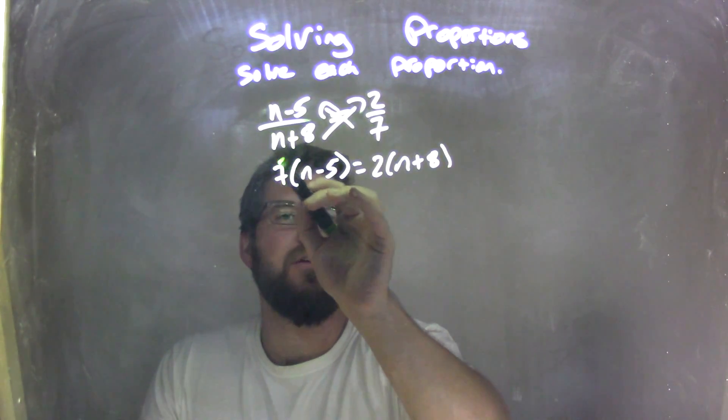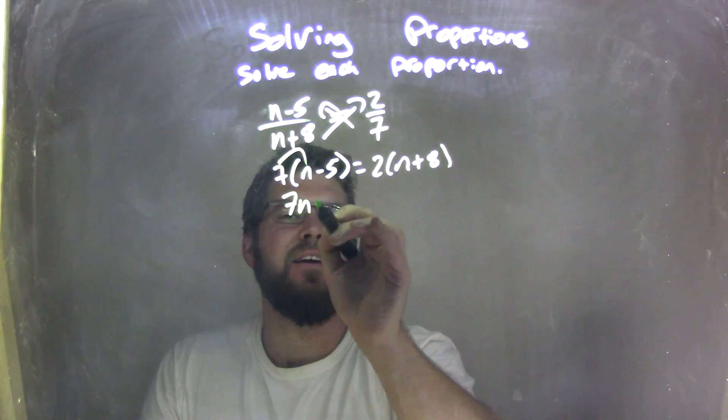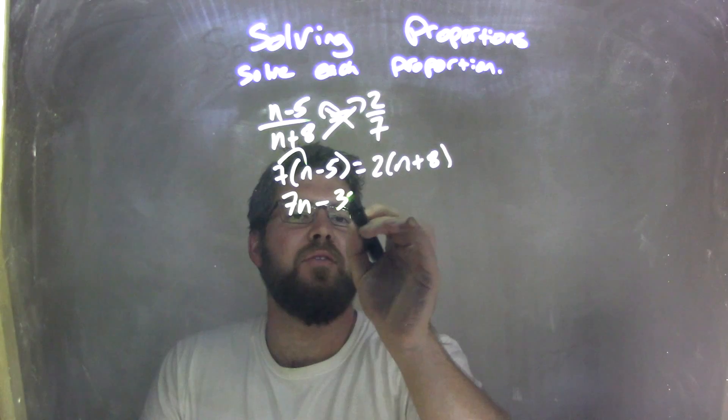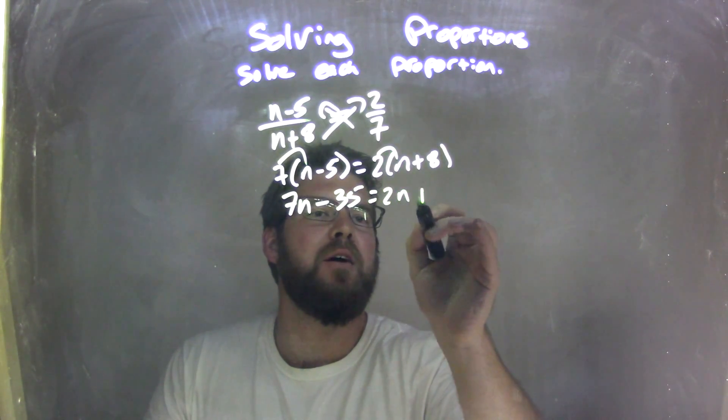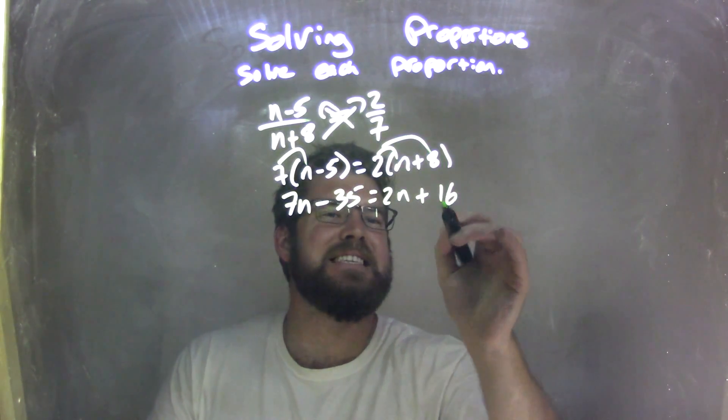Well, distribute here. 7 times n is 7n, and then 7 times 5 is 35, equals 2 times n, which is 2n, plus 2 times 8, which is 16.